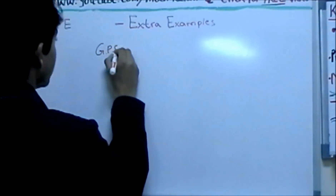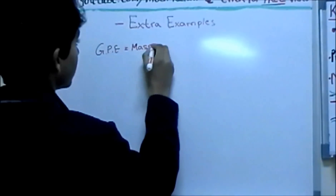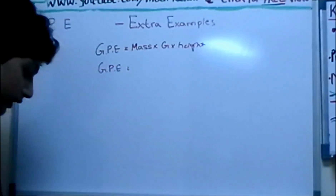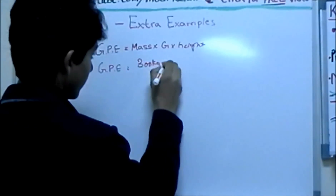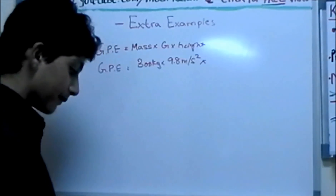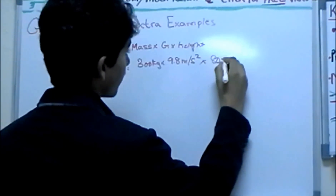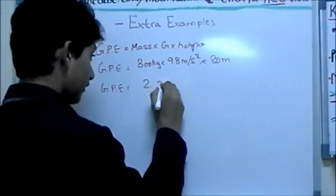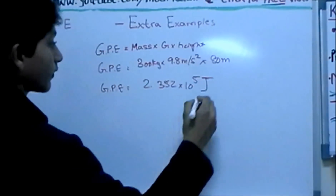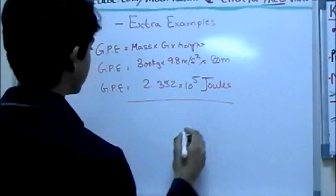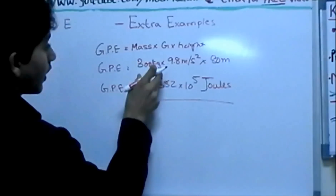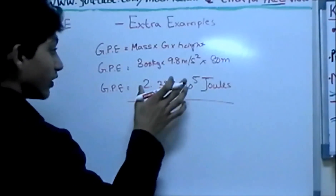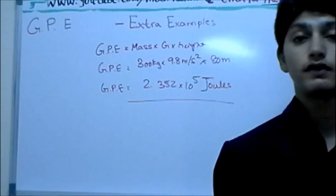Gravitational potential energy is equal to mass times gravity times height. The mass is 300 kg, times gravity which is 9.8 m/s², times the height of 80 meters above the ground. When you calculate this in your calculator, you should get 2.352 × 10⁵ joules. So the elevator, which has a mass of 300 kg and is stuck at 80 meters of height and is not moving at all, has a gravitational potential energy of 2.352 × 10⁵ joules.